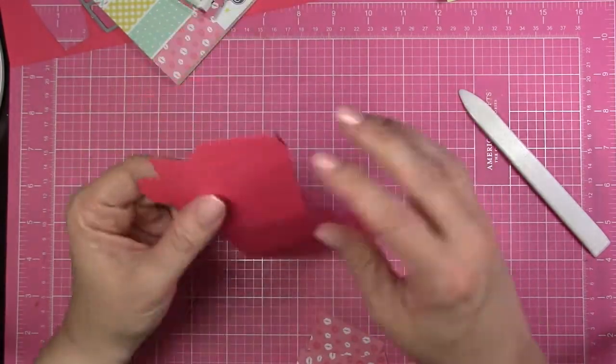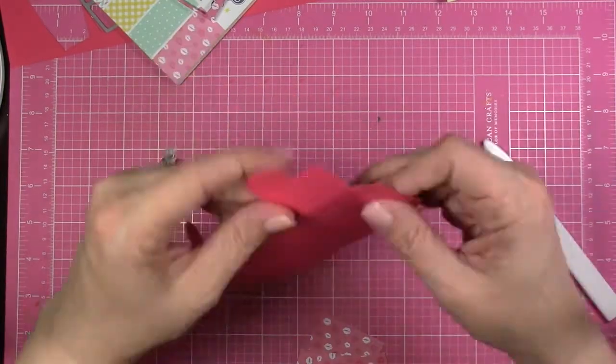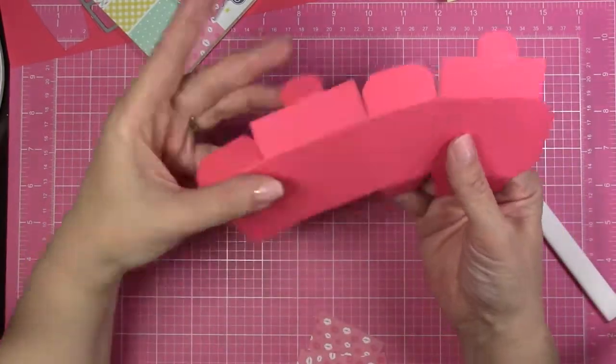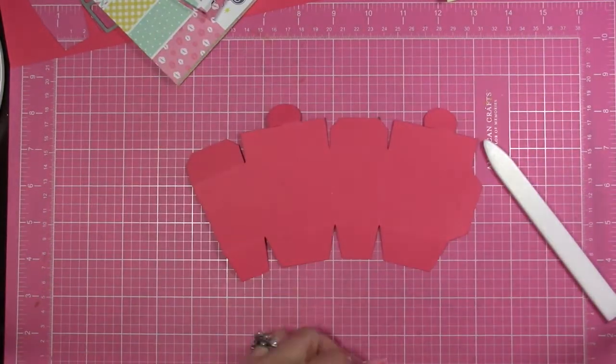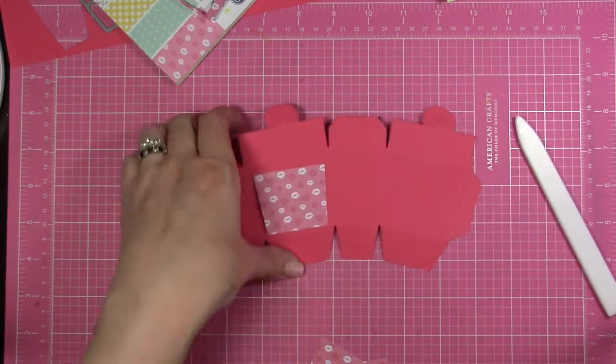I'm just using my hand here, and then if you really want to make it nice and crisp, there's one on the end here you might need your bone folder for. So I'm just folding on all the lines, and then I'm going to use the tape to tape those pieces of pattern paper down.